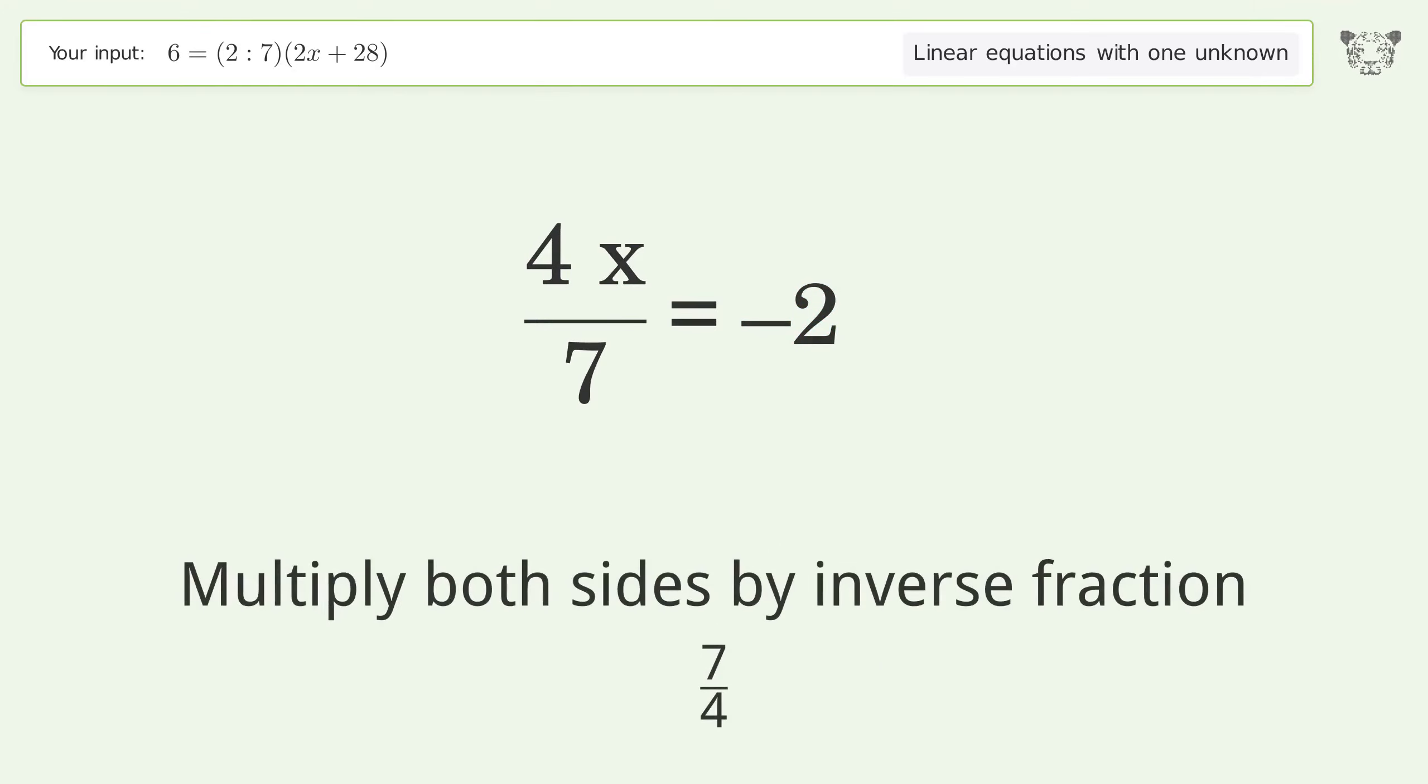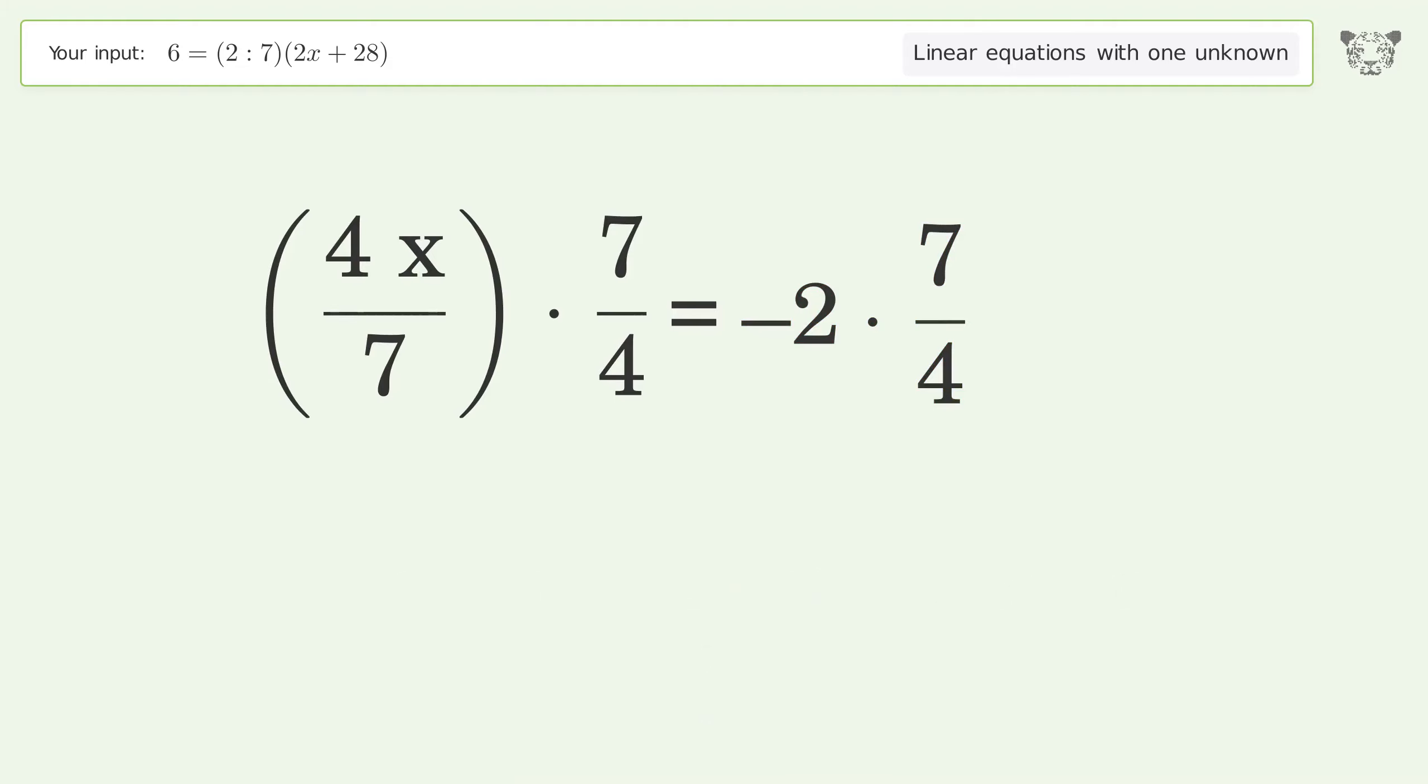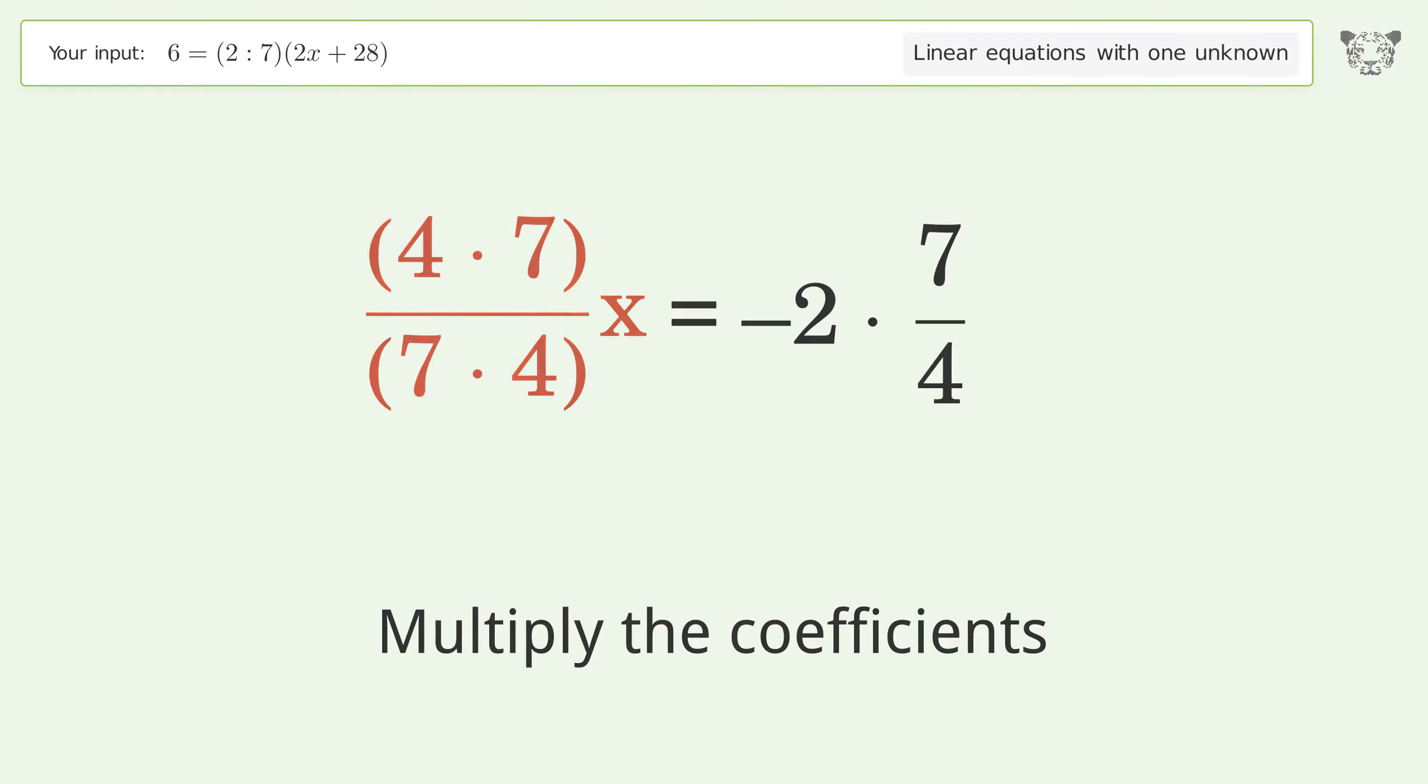Multiply both sides by the inverse fraction 7 over 4. Group like terms. Multiply the coefficients. Simplify the fraction.